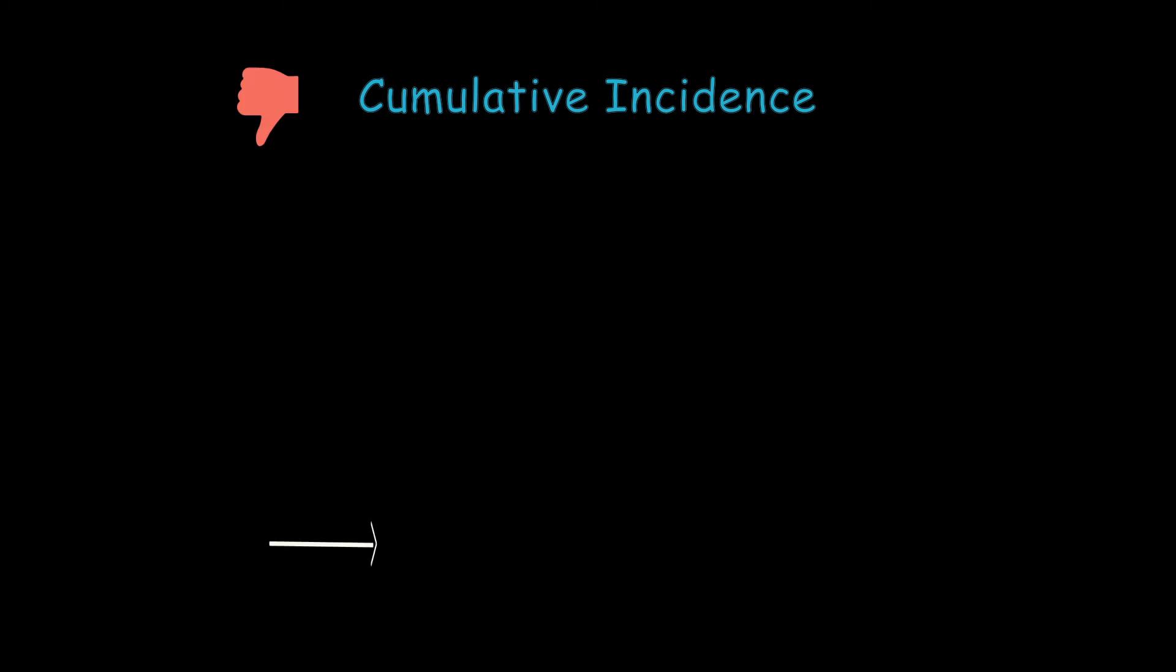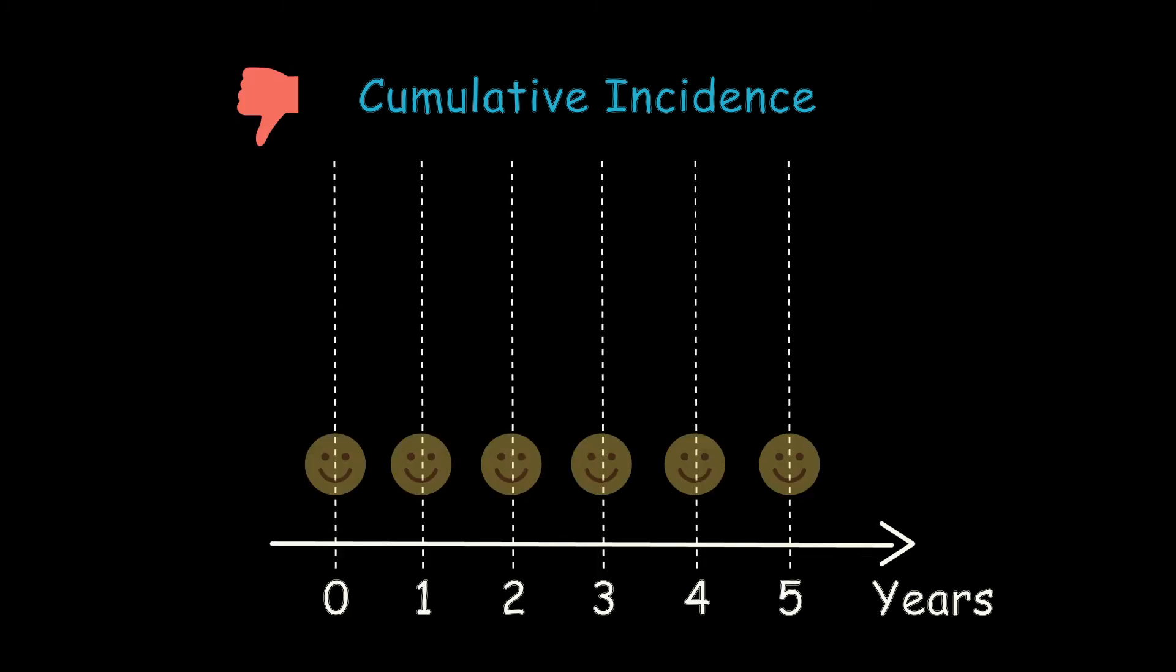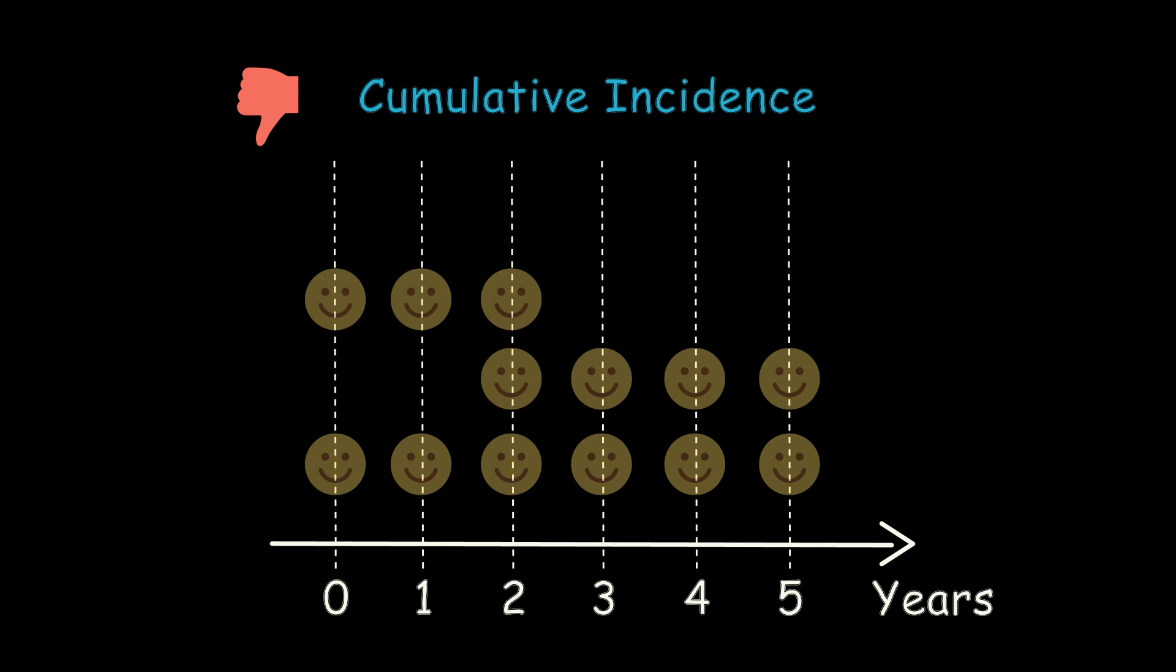But the problem with cumulative incidence is that it assumes that the follow-up period is the same for all study participants. This is almost never the case, especially for long periods of follow-up, because new participants can enter the study during this period, and others may be lost to follow-up by leaving the study voluntarily or dying before the study ended.